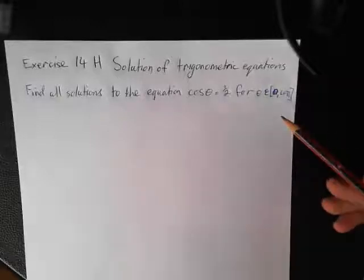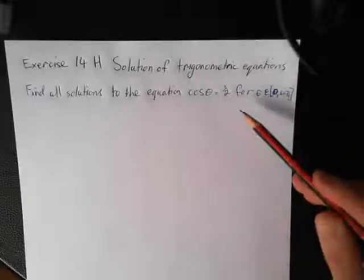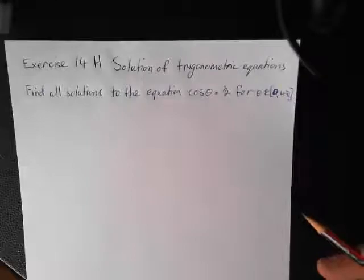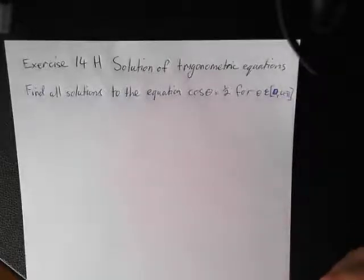So imagine we were asked to find all solutions to the equation cos theta equals a half for theta between 0 and 4 pi. The first thing we have to do here is we have to work out exactly when does cos theta equal a half.